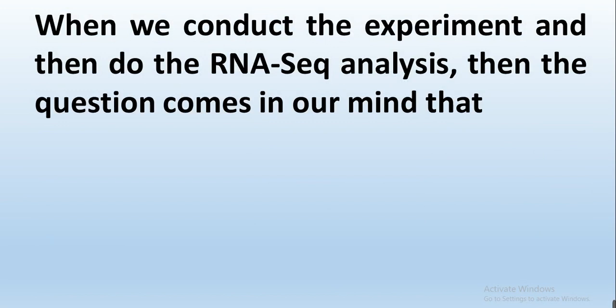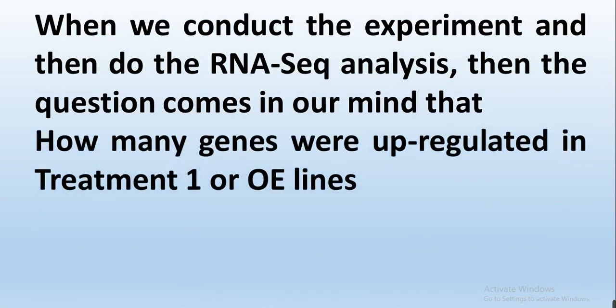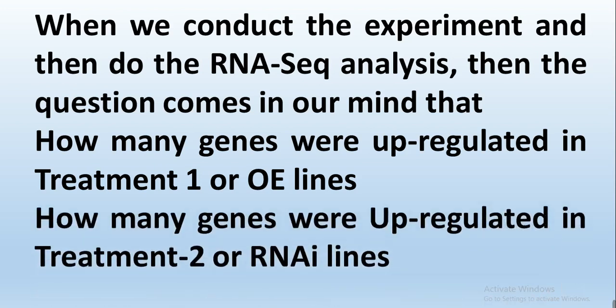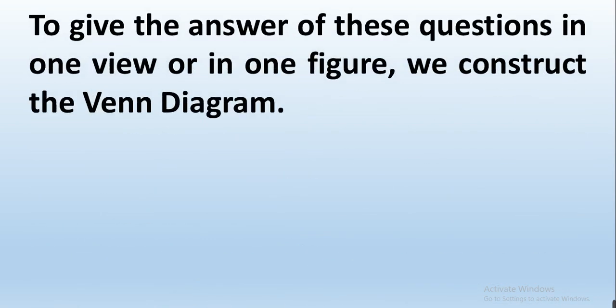When we conduct an experiment and then do the RNA-seq analysis, the question comes to mind: how many genes were upregulated in our treated sample one, or in our overexpressed lines, and how many genes were upregulated in treated sample two, or our RNAi knockdown lines? To keep the answer to these questions in one view or one figure, we construct the Venn diagram.